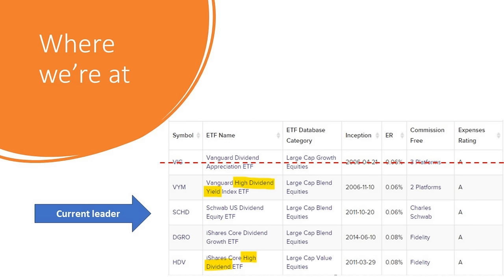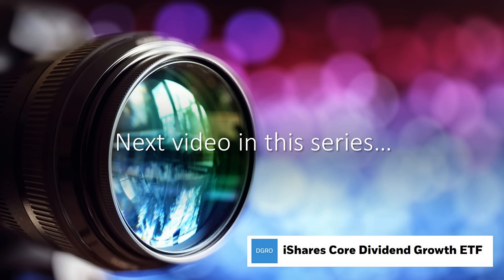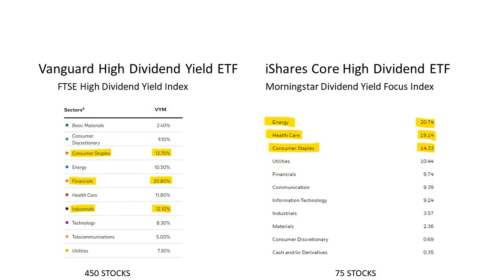VIG has been crossed out. Schwab's SCHD is actually third place by AUM. Then we have two other ETFs: VYM and HDV — Vanguard's High Dividend Yield ETF and iShares Core High Dividend ETF. Those are what we're going to look at today. The next video in this series will be the iShares Core Dividend Growth ETF, so make sure you subscribe.